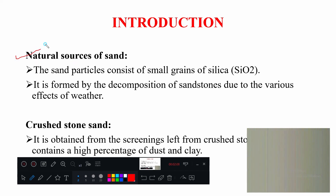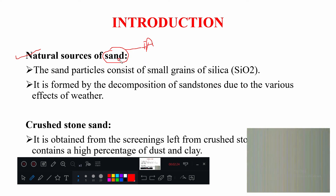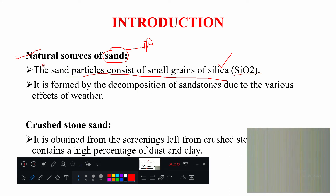In the introduction, we will see the natural sources of sand for construction purposes. Sand is a fine aggregate. Sand particles consist of small grains of silica — the major compound present in sand is SiO₂, silicon dioxide.